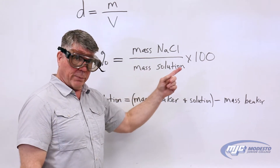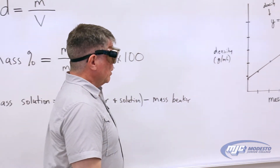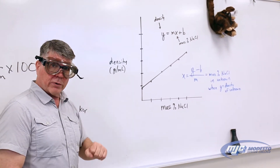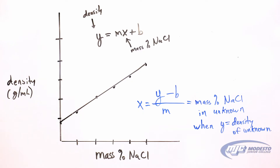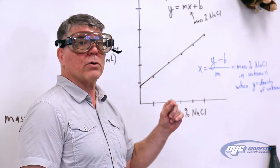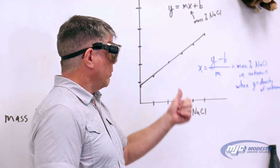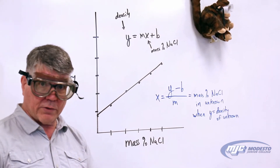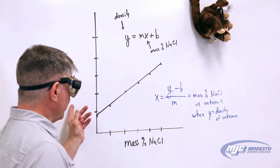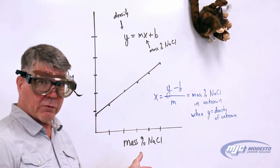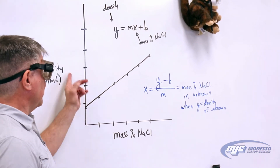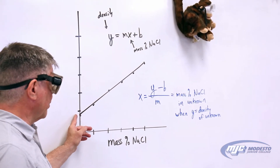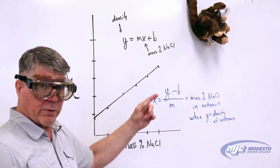When we're doing our calculations, this is basically the graph that you're going to make — we're going to graph density versus mass percent. You're going to have six points on your graph. You'll be able to calculate the density of the five solutions that you make up — solutions one, two, three, four, and five — as well as that of deionized water. Remember in deionized water there is no sodium chloride, so the mass percent is zero. So that point will be at zero on the x-axis, but the density is not zero — it's going to be some number. The other five points are the density and mass percent of the other five solutions.